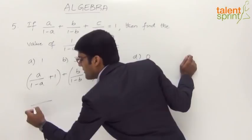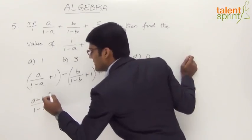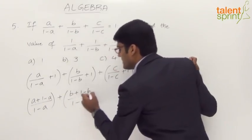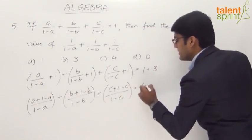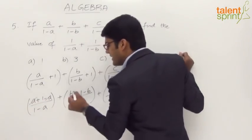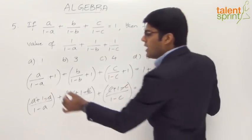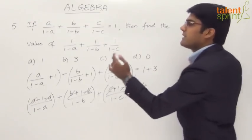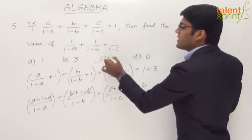Simplifying each term, the denominator stays (1−a) and the numerator becomes a + (1−a). Similarly for b and c we get b + (1−b) and c + (1−c), all over their respective denominators, equal to 4. In each numerator, a and −a cancel, b and −b cancel, c and −c cancel, leaving 1/(1−a) + 1/(1−b) + 1/(1−c) = 4, which is option C.